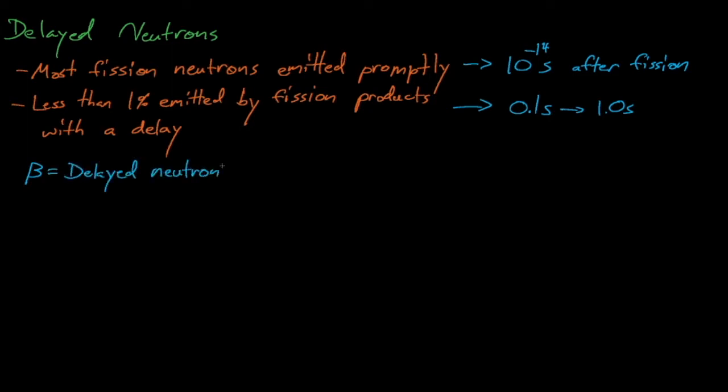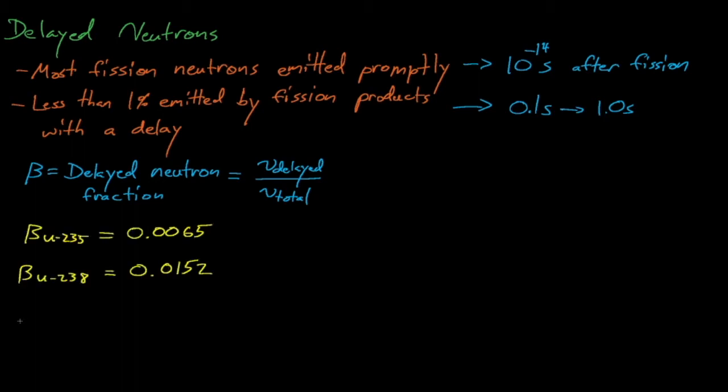The variable beta is known as the delayed neutron fraction, and like its name suggests, it represents the fraction of fission neutrons that are emitted with a delay from these radioactive fission products. Beta equals around 0.0065 for uranium-235, and about 0.0020 for plutonium-239.